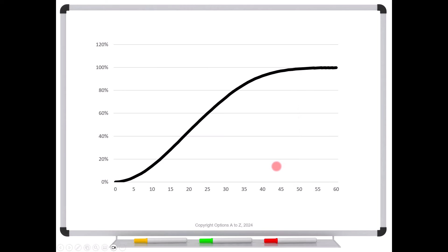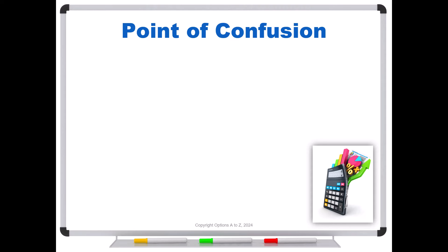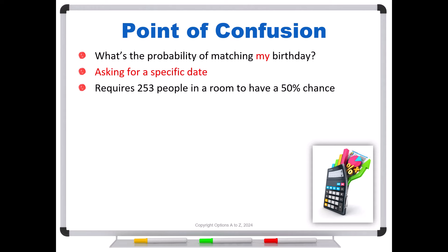It only takes about 50 people to where you are almost 100% certain that two will have a matching birth date. Now there is a point of confusion that some people say, there's no way this can possibly be true. And the reason for that is that they are thinking the question is, what's the probability of matching my birthday? And that's asking for a specific date. Now in order for that to be true, we would have to do exactly the same math that we just saw, but you're going to have to go down 253 rows in that Excel sheet before you find a 50% chance of having at least two that match. So that would require 253 people in the room to have a 50% chance that they match your birthday.